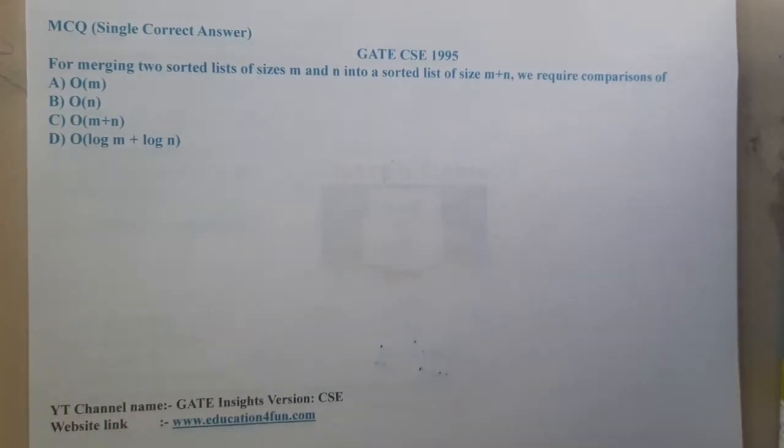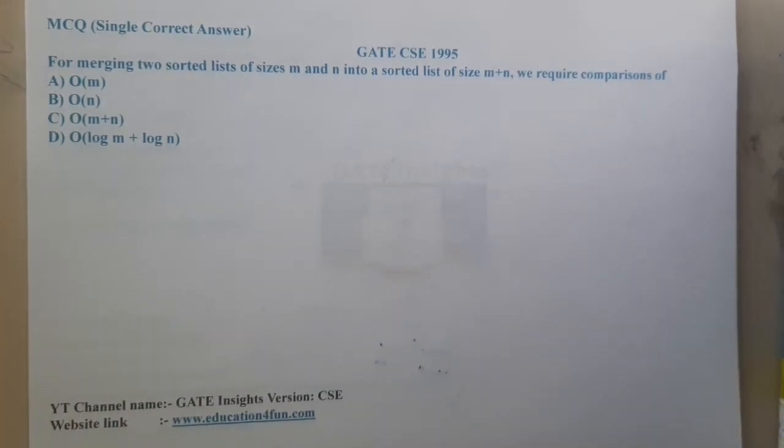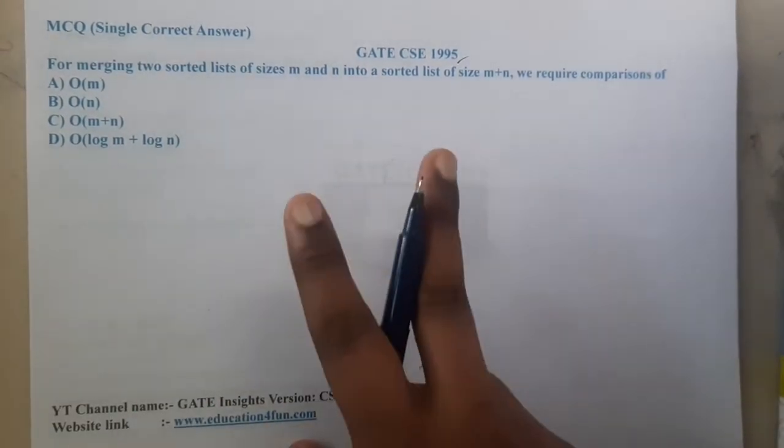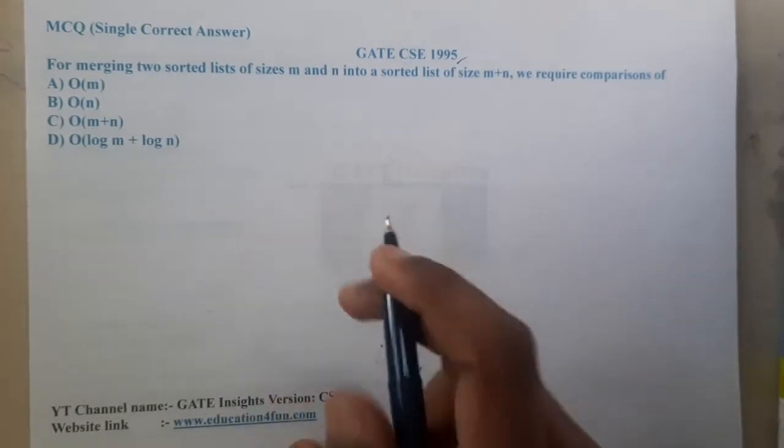Hello guys, we are back with our next lecture. In this lecture, let's go through the next question. This question belongs to GATE CSE 1995. The question is: for merging two sorted lists of sizes m and n